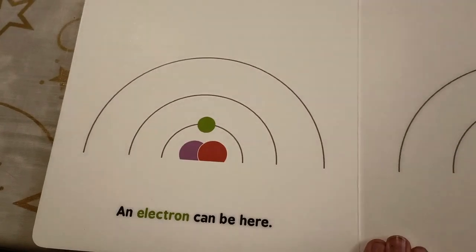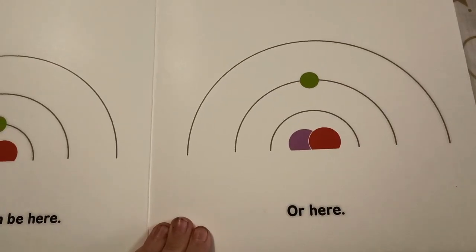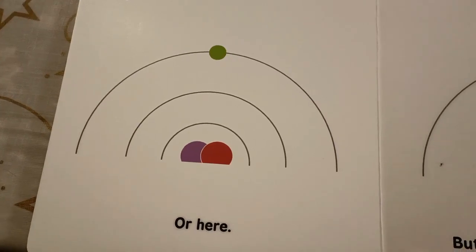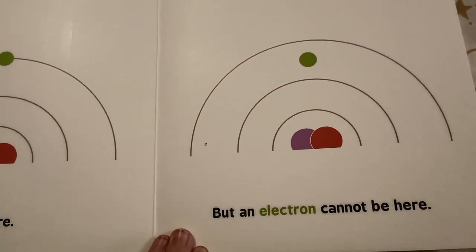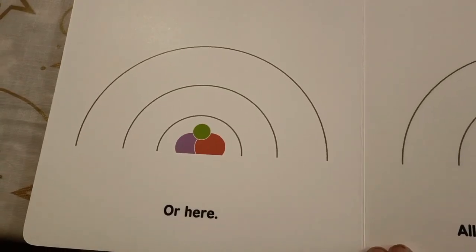An electron can be here, or here, or here. But an electron cannot be here, or here.